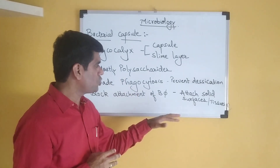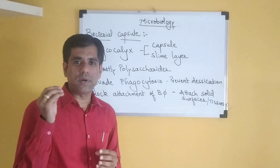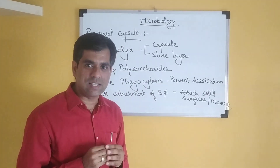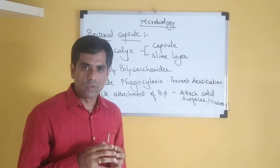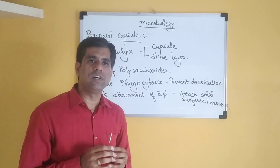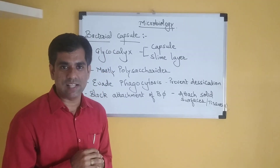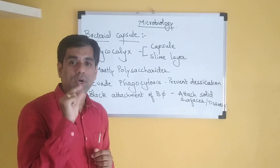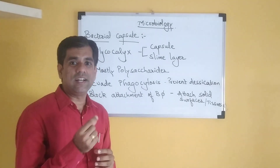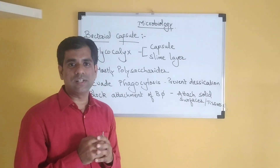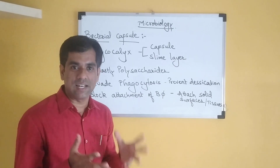This particular capsule also helps to attach to solid surfaces and to host tissue. If a bacterium has to cause a particular disease, the first step is to find a site where it will attach. To quote an example: Streptococcus mutans is an organism which causes dental caries. It has a glucan layer, and with the help of that glucan layer — which is its capsule — it attaches to our teeth, sticks there, and leads to the formation of dental caries.